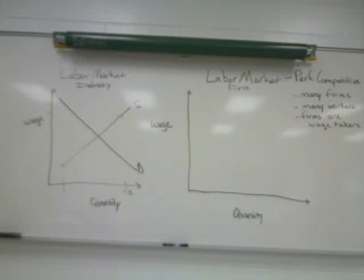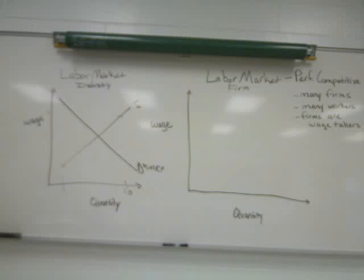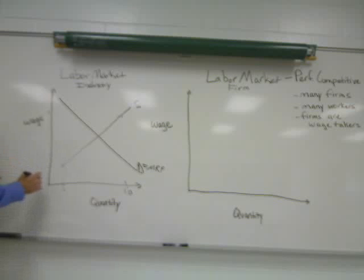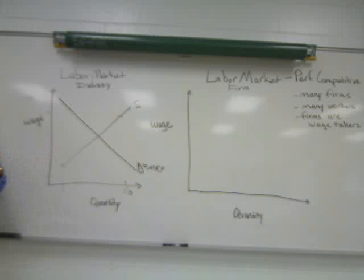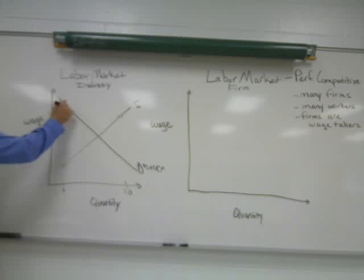This curve has a negative slope because of something abbreviated MRP, or marginal revenue product. Each worker's value from the point of view of the firm is based upon the additional revenue that worker provides the firm. Because of diminishing marginal returns, as we employ more and more workers, the additional revenue each worker adds to the firm's total revenue becomes less and less. For example, one worker may be extremely productive, adding a lot to the firm's total revenue, so the firm is willing to pay them a lot to match the revenue they're providing.